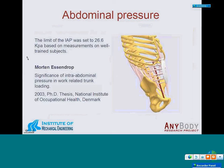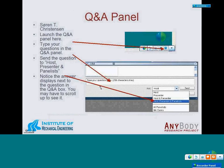We also set a limit on the intra-abdominal pressure of 26.6 kilopascal, based on real measurements on well-trained subjects performed by Martin Essendrup in his PhD work on 'Significance of Intra-abdominal Pressure and Work-related Trunk Loading' from 2003. He also published related work in Spine and the Journal of Biomechanics — I think it's worthwhile reading.